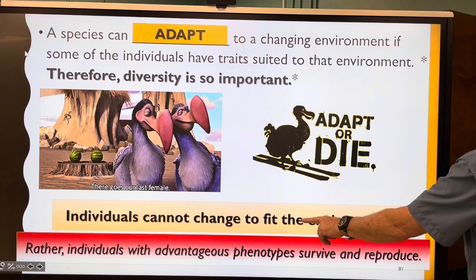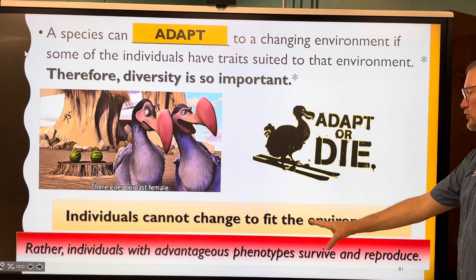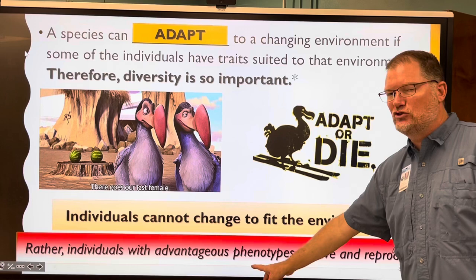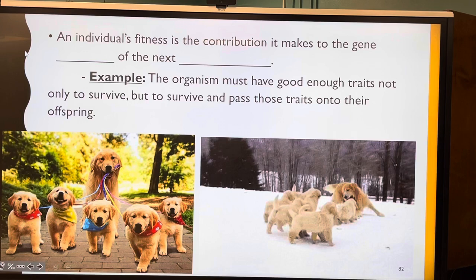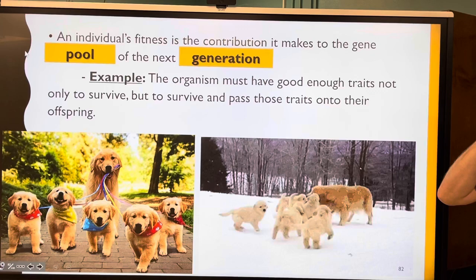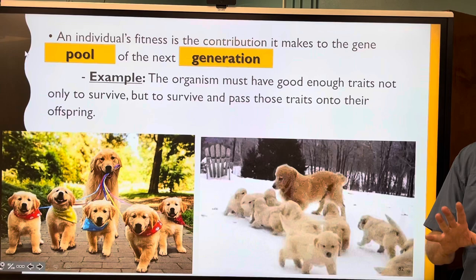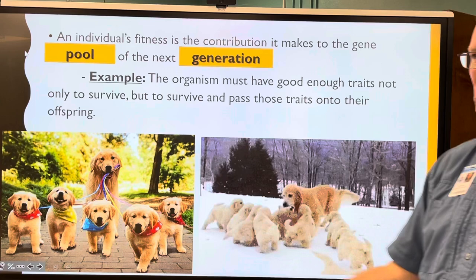Individuals cannot change to fit the environment — remember, nothing in Ice Age is really true. Rather, individuals have advantageous phenotypes that help them survive and reproduce, and then the species evolves. An individual's fitness is its contribution to the gene pool of the next generation. Not just survival — they have to survive, have babies, and those babies also have to survive to pass on traits and allow the species to evolve.